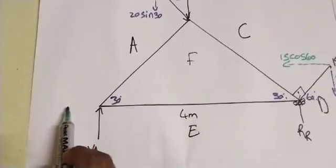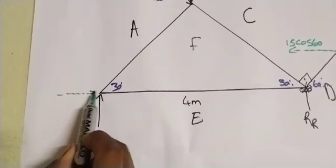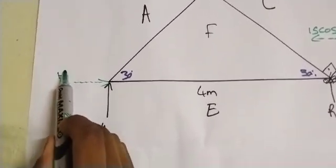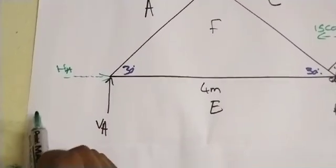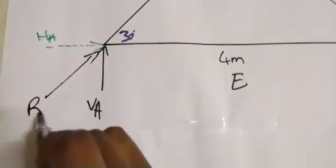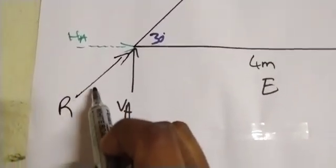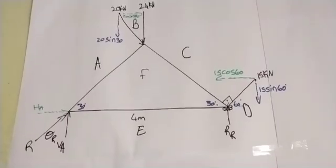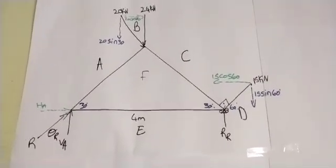Over here we also have our hinge. Our hinge is, we can assume it's going that way. And this is our hinge, we will just leave it like that. And then it will also have our resultant force and then we also have our angle of resultant over there.